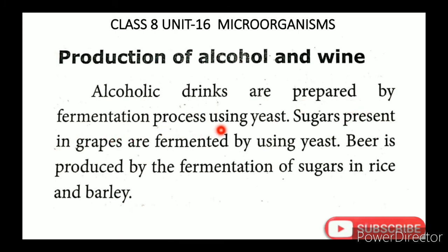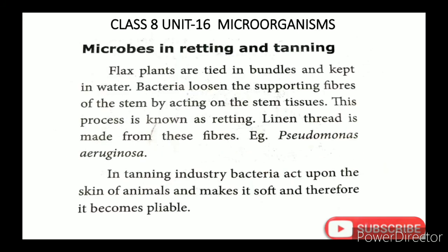Alcoholic drinks are prepared by the fermentation process using yeast. Alcohol is produced in beer and wine. Sugars present in grapes are fermented by yeast to produce wine. Beer is produced by fermentation of sugars in rice and barley.